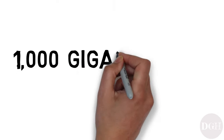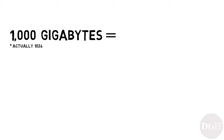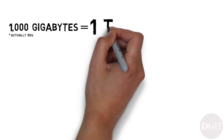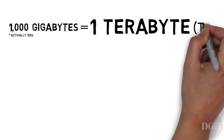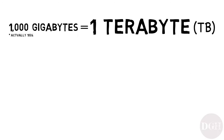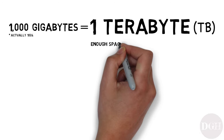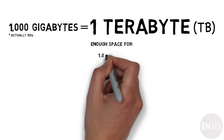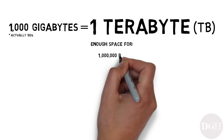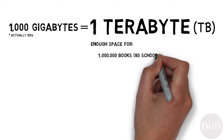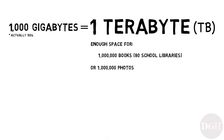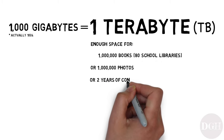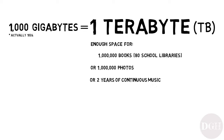A thousand gigabytes is called a terabyte, abbreviated as TB. A terabyte is enough space to hold about a million books — which is around 80 school libraries — or a million photos, or two years of continuous music.